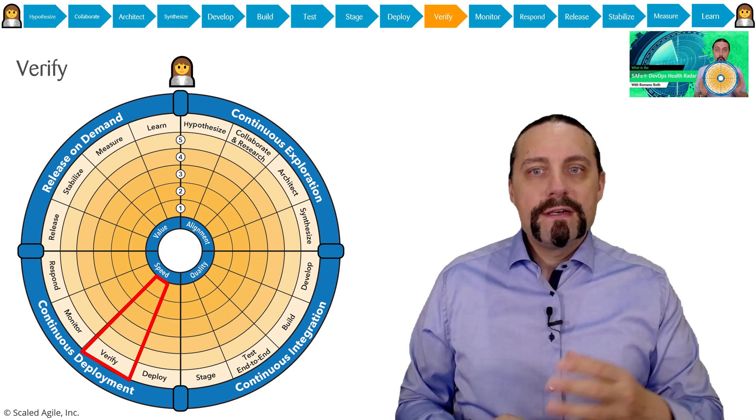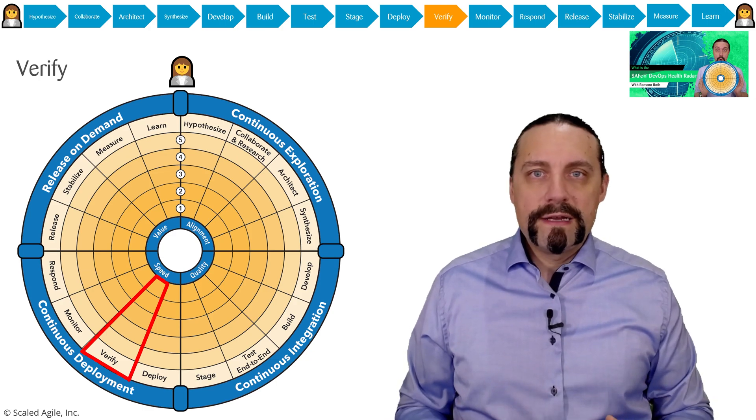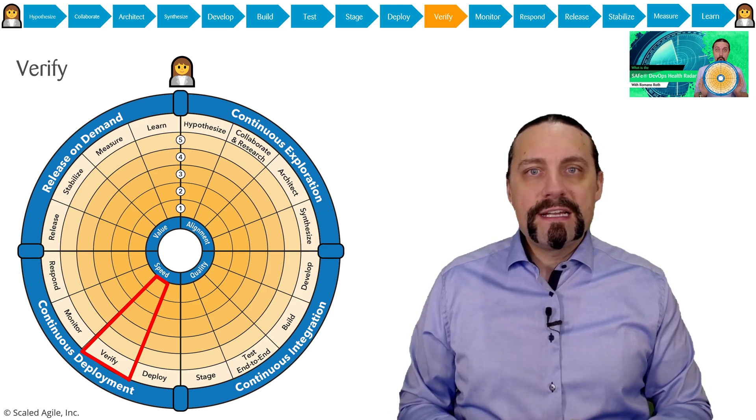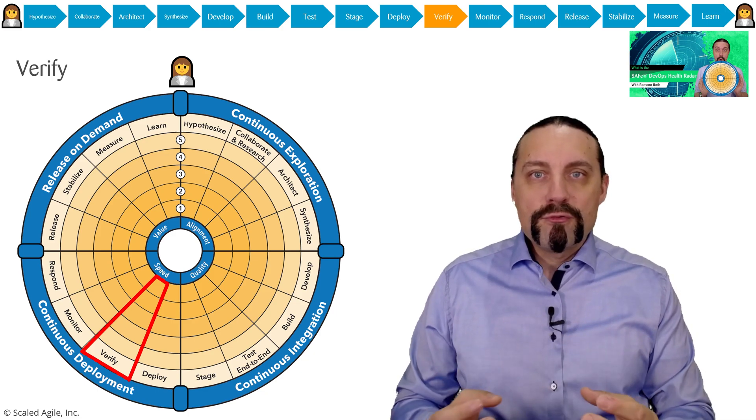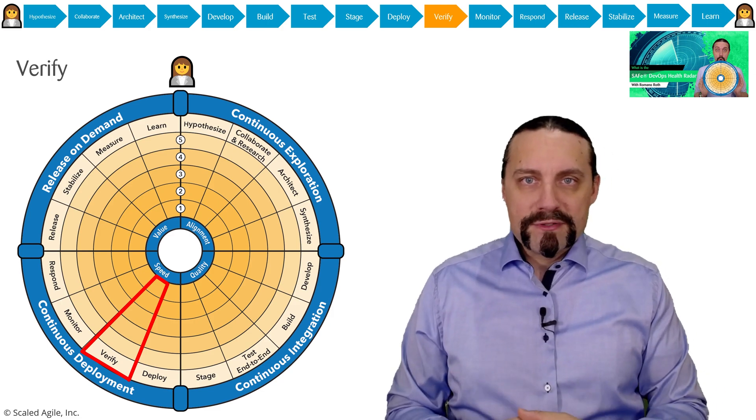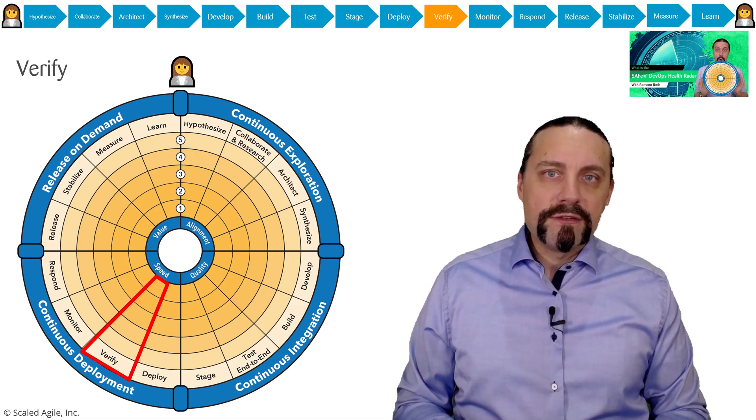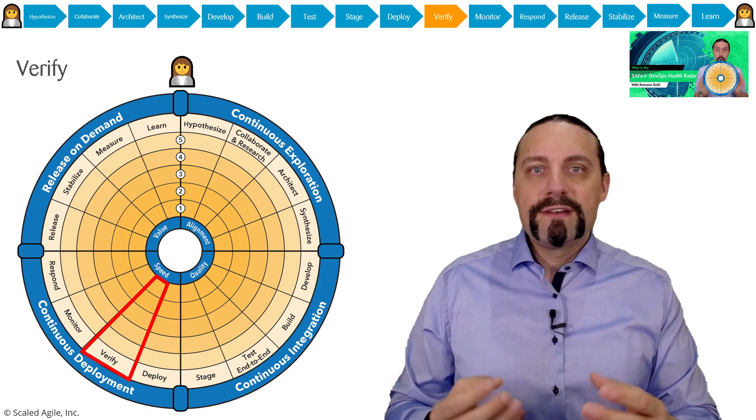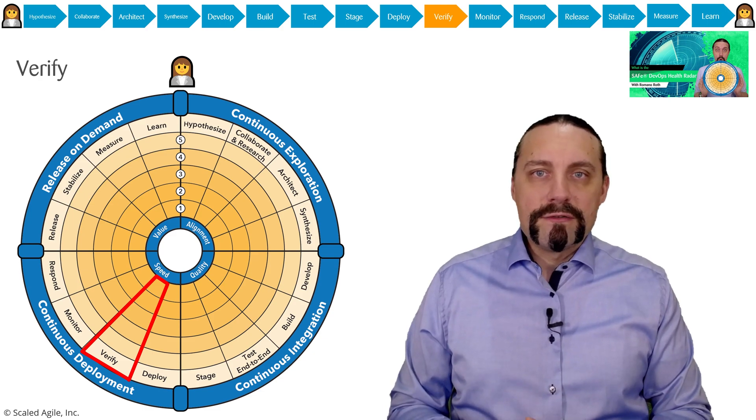In my previous videos, we went through continuous exploration into continuous integration. We learned there how to transform the bright ideas from the customer and the business into a hypothesis statement, how we do the collaboration and research, how we architect so that we can prove the hypothesis, and how we can transform the epics with the hypothesis statements into features. The features are then broken down in the continuous integration into user stories, which we are then coding or building the software upon. And we build the deployable package which then gets tested and deployed into a staging environment.